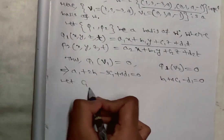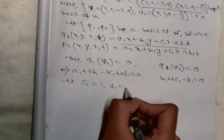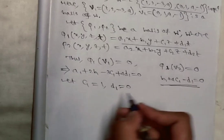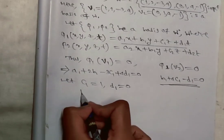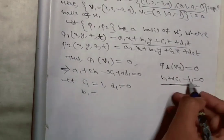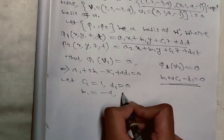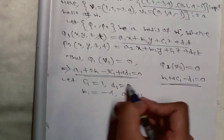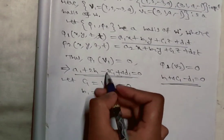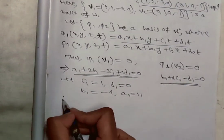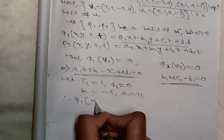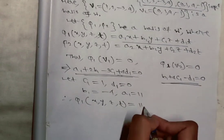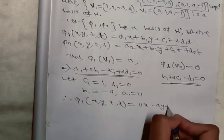Now let c₁ = 1 and d₁ = 0. Putting these values into the equation, we get b₁ = -4 and a₁ = 11. Therefore φ₁(x,y,z,t) = 11x - 4y + z.